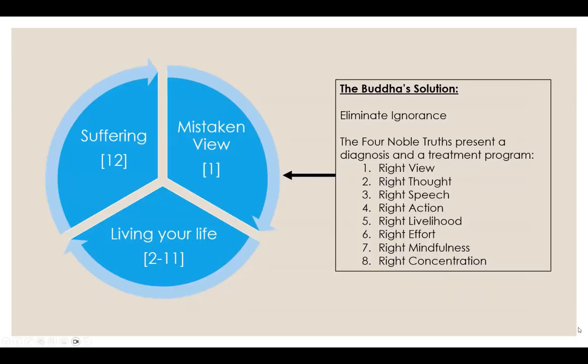So, how do we use this and what do we do about it? Here's my simplified view: we start with mistaken view — that's number one. Two through eleven are living your life, and number twelve is suffering. The Buddha's solution was pretty obvious: eliminate ignorance. Why not start at the beginning of the chain and cut it off there? He gives us a diagnostic tool with a treatment program — the Four Noble Truths — and the treatment program is the Noble Eightfold Path. First, get rid of your mistaken view by cultivating right view. Then also practice right thought, speech, action, livelihood, effort, mindfulness, and concentration. That was the Buddhist solution: start at number one, cut it off there, you fix the problem.